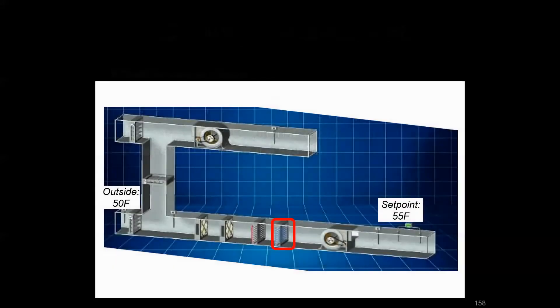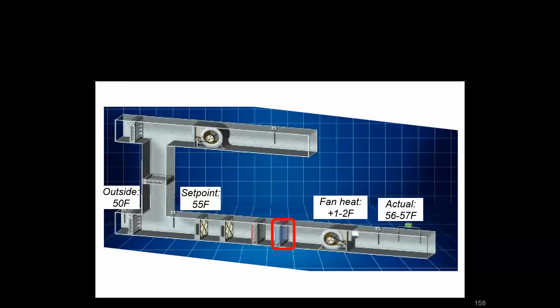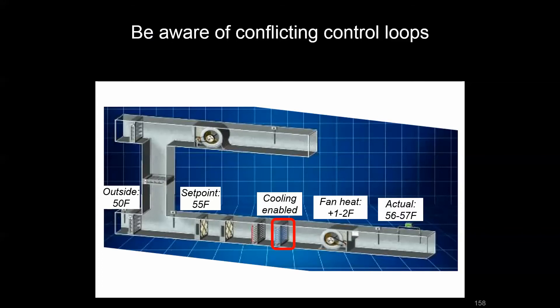What do we mean by good coordination of set points? Say it's 50 degrees outside and you're trying to hit a supply air set point of 55 degrees — you shouldn't need to use your cooling coil. But if you set it right at 55, the supply fan doing work on the air will add a degree or two, giving you 56 or 57 degree supply air, which may enable your cooling coil unnecessarily. Because of this poor set point coordination, you're using more energy than needed.